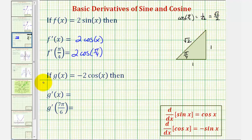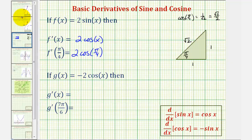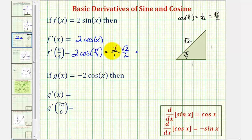Using the unit circle, here's the terminal side of pi over four radians. On the unit circle, x equals cosine theta and y equals sine theta. Notice how the x coordinate here is square root two divided by two. Therefore, two times cosine pi over four would be equal to two over one times square root two divided by two. Notice how the two simplifies to one, leaving us with a derivative function value of square root two.